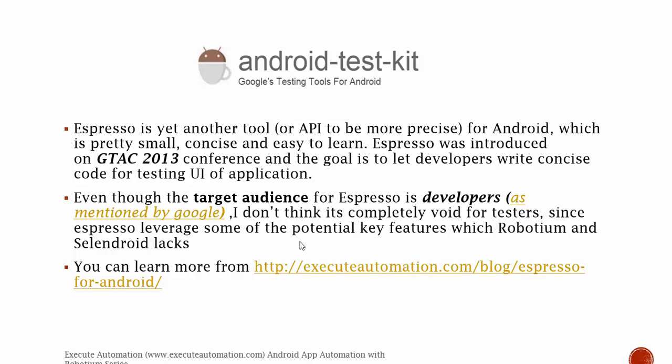The last tool we're going to discuss is Espresso. Espresso is an automation testing API for Android which is pretty small, concise, and easy to learn. It was introduced at the Google Talk 2013 conference, and the goal is to let developers write concise code for testing the UI of applications. Even though the target audience for Espresso are developers as mentioned by Google, it also offers some key features that Robotium and Selendroid lack. You can learn more about this from the link below and from our ExitAutomation.com website.